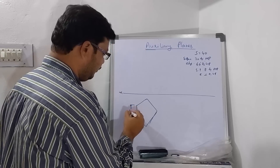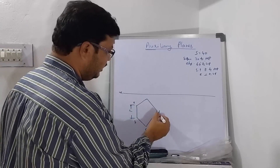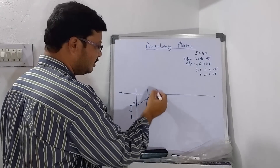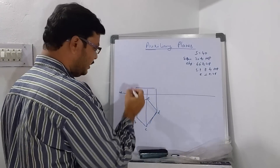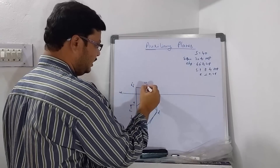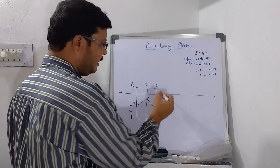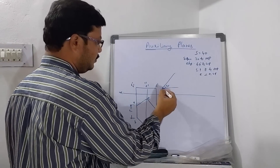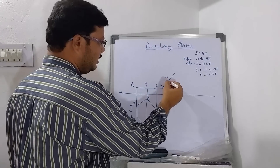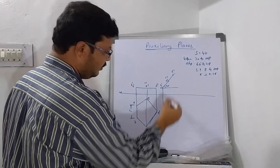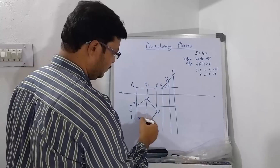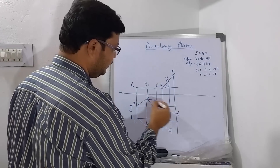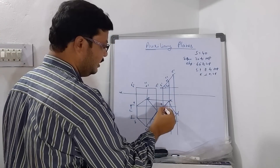The side is 40 mm and the angle is 70 degrees. The points are labeled A, B, C, D, E. As the surface is parallel, you take the center at some distance from the XY line. This is the front view. Then you draw the projectors. The points in the top view are A, B, C, D, E — this is the reduced shape in the first stage.